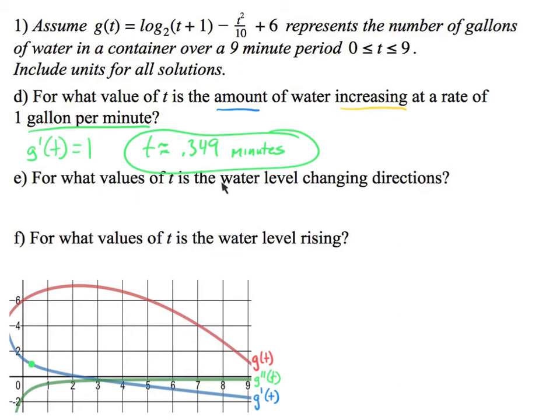Next, for what values of T is the water level changing directions? So I want the water level changing directions. The key word is changing directions. So to get a change of directions, don't we first want to find where G prime T equals 0? To change directions, doesn't the rate have to stop? To change directions, meaning it was going up, but now it's going down. Or it was going down, now it's going up. Don't we want where the rate is equal to 0? And we want to make sure that it changes, so that it changes signs. We also want it to change signs.